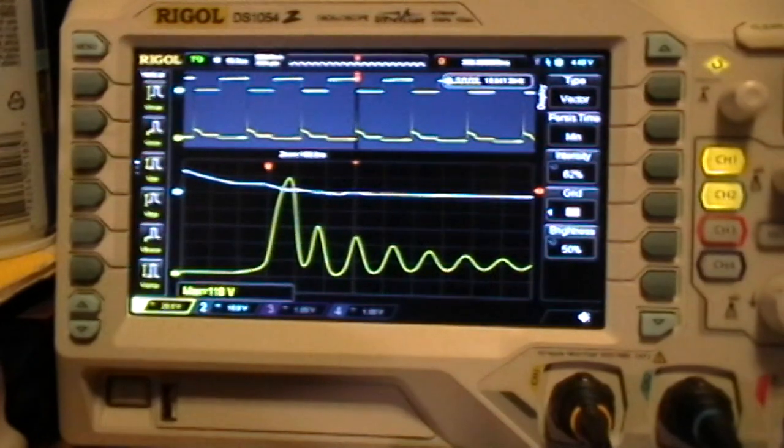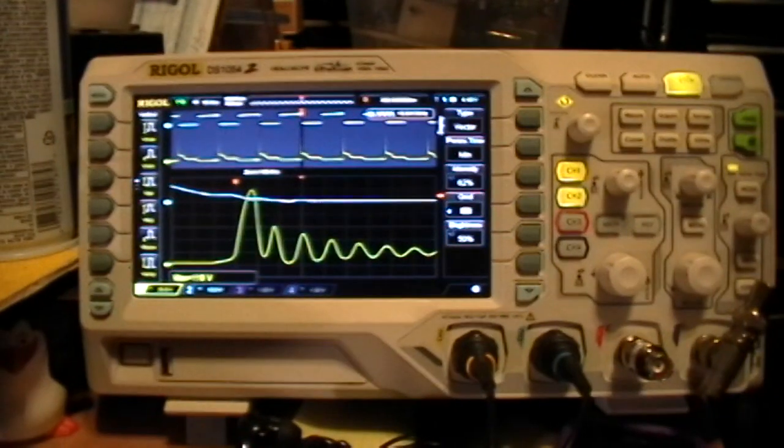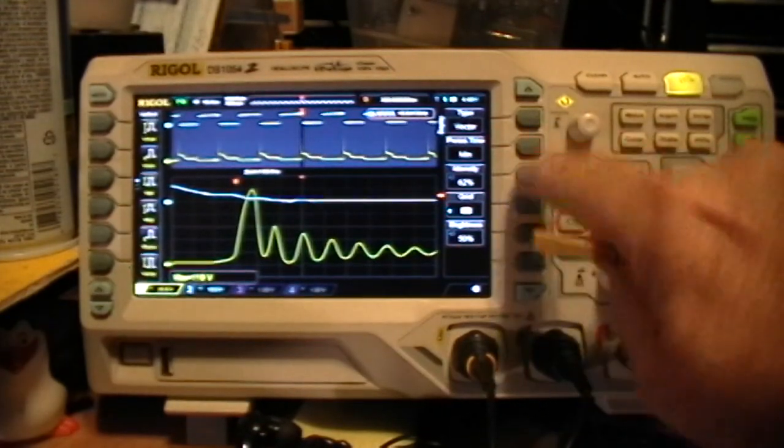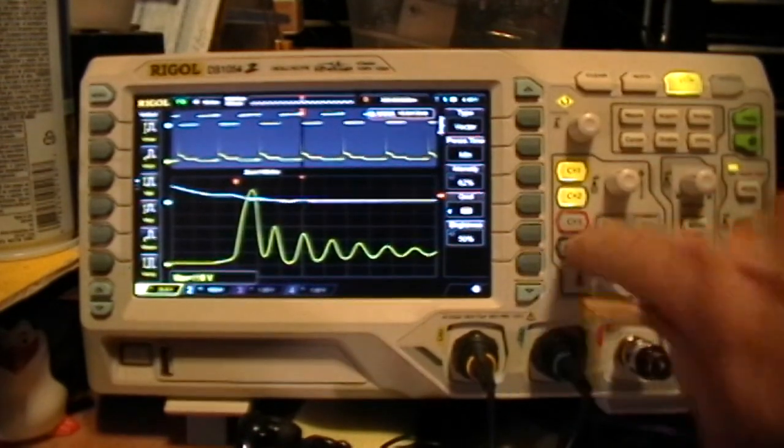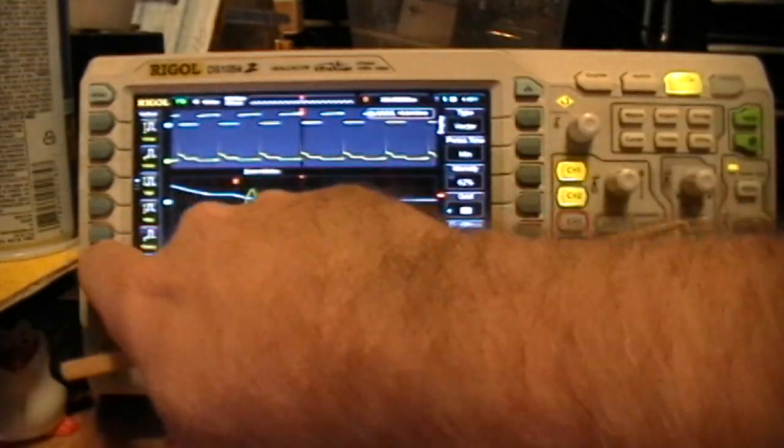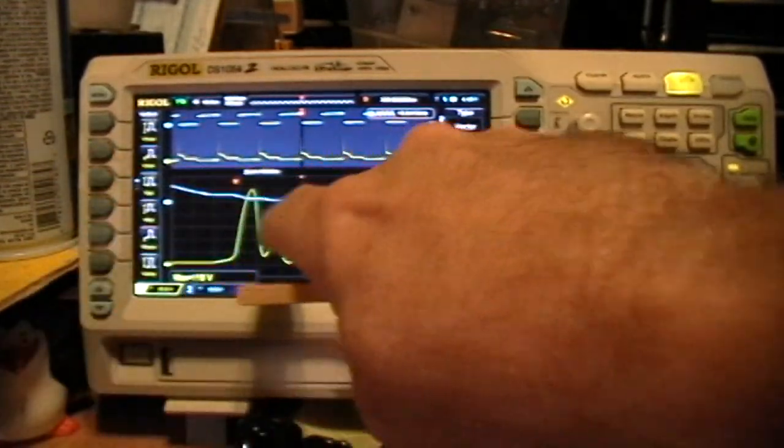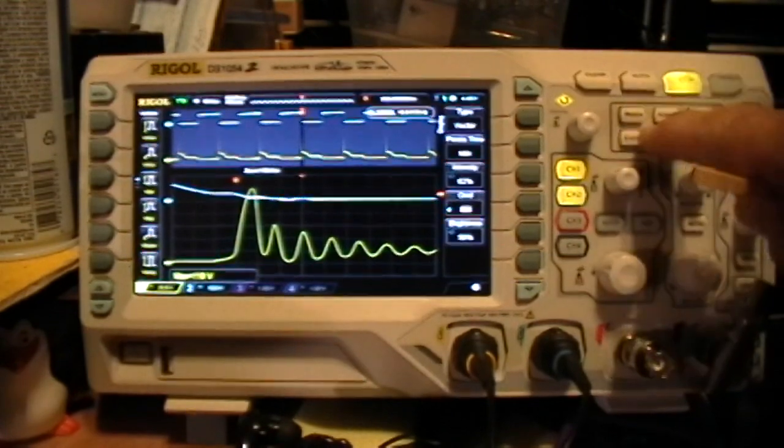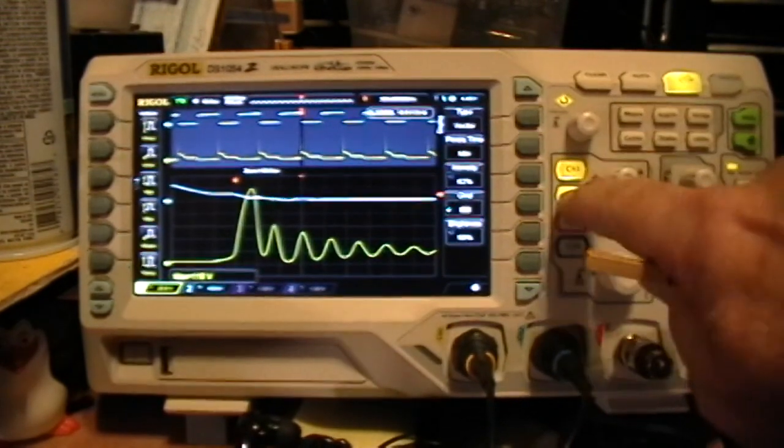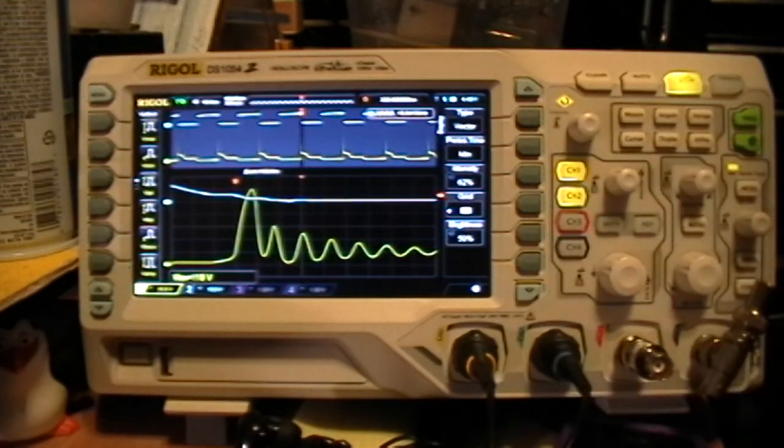the scope is completely frozen. It does not respond to any button presses. It's still displaying a live trace. It did not actually put any persistence in there, but the scope is frozen. What the hell, Rigol?